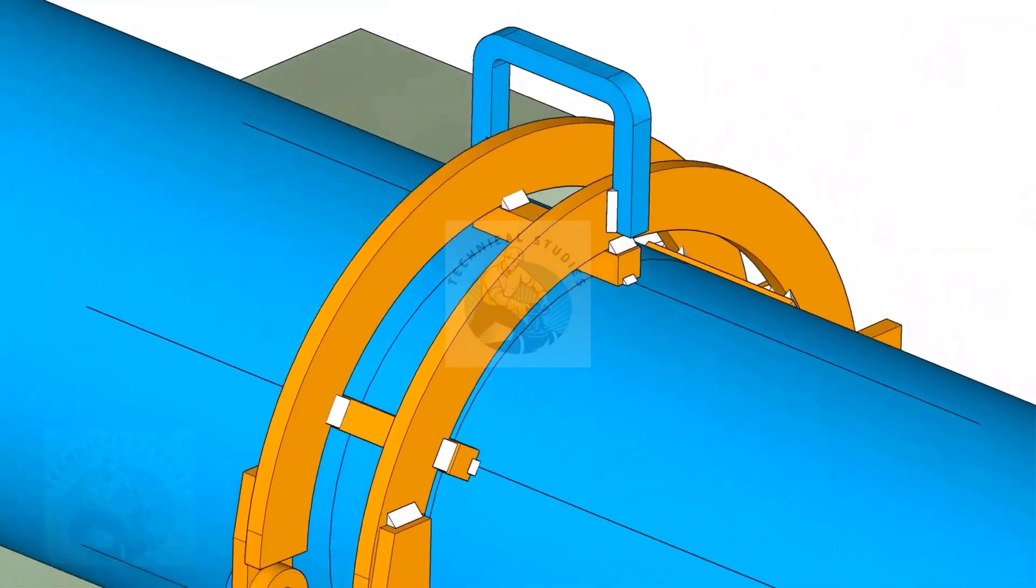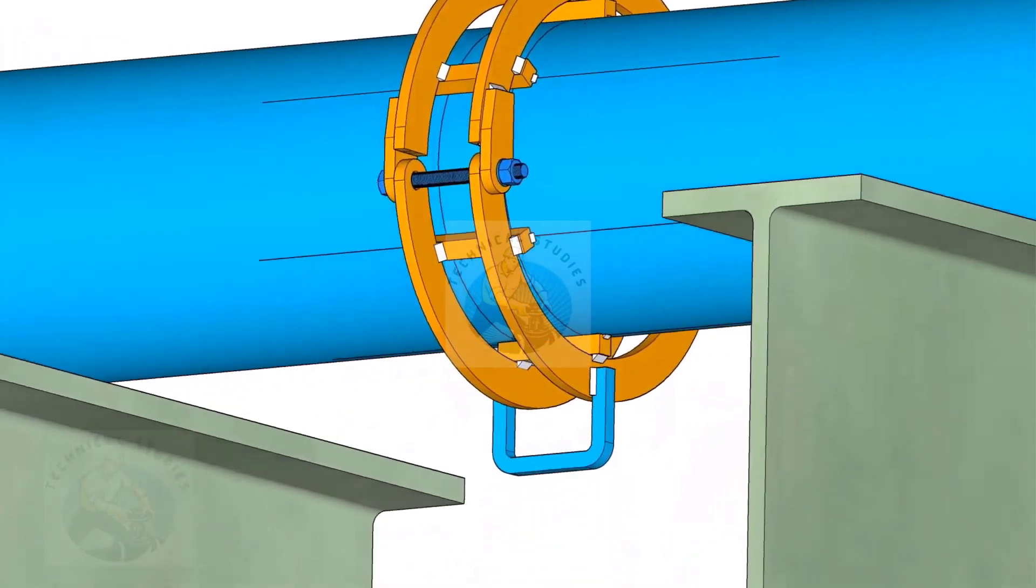After welding, cut the tacks with pipe and the square bars. Grind smooth all parts.